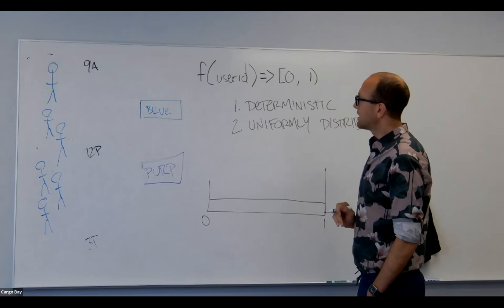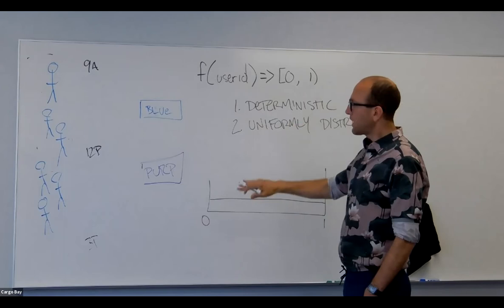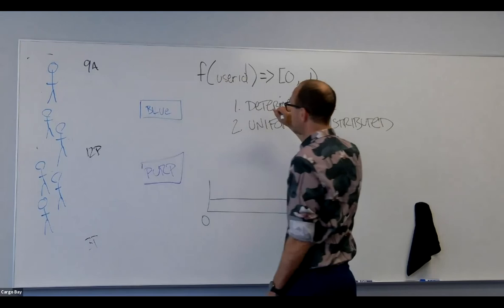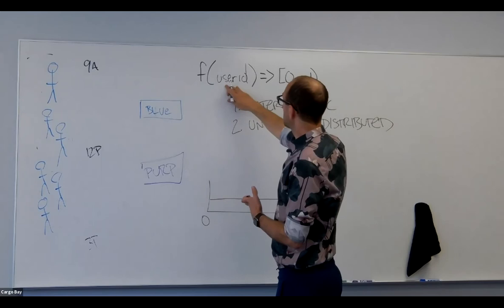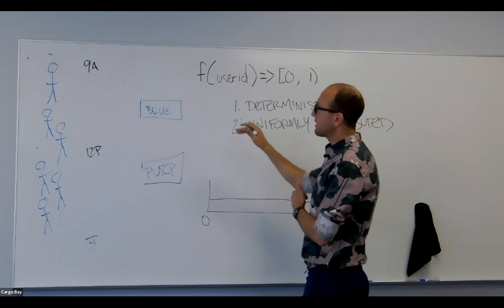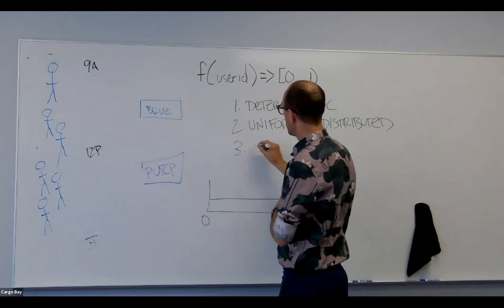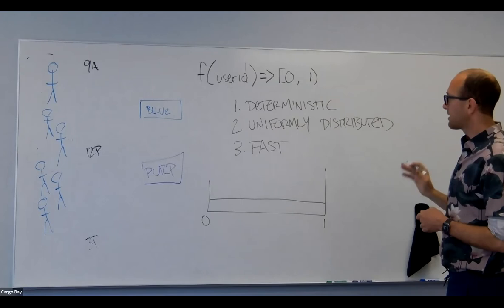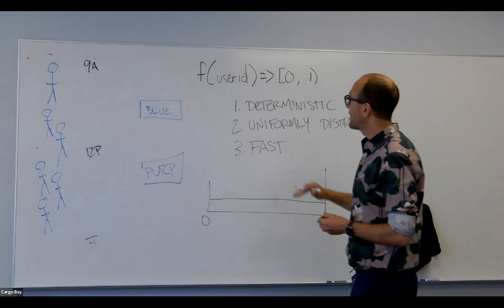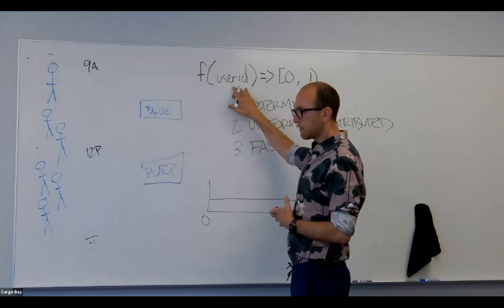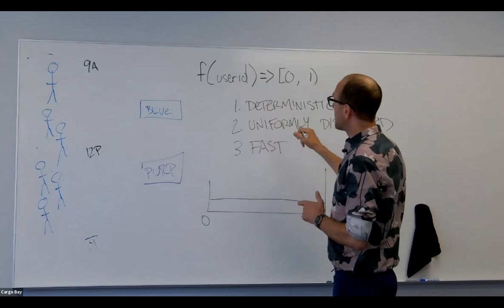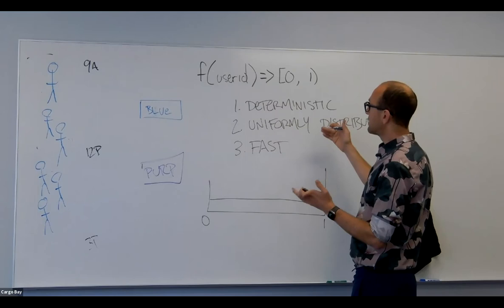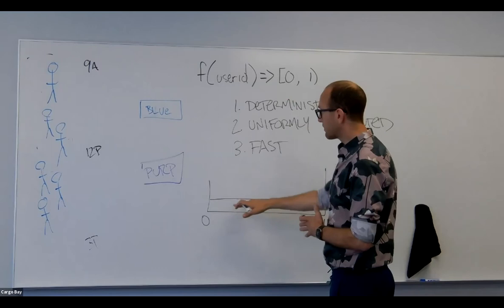What's nice about a deterministic function is you don't have to cache allocation results. If a user is allocated to blue by getting less than 0.5, the next time they refresh the page they'll still get blue. But since we're evaluating this every time they refresh, the function also needs to be very fast. The mechanism under the hood is hashing the user ID using a hash function that satisfies these criteria, converting it to an integer, and scaling it to the output range.